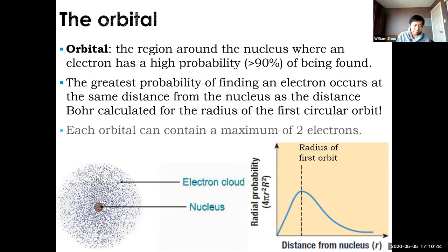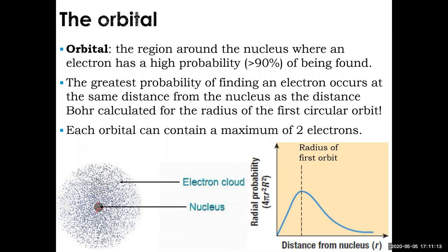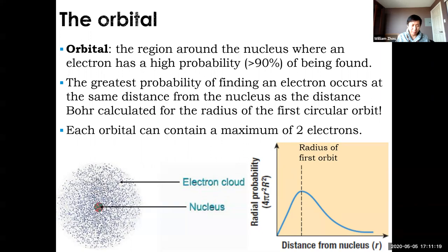An orbital can contain a maximum of two electrons — no more than that. Once you know there are two electrons in there, there won't be a third. If you have more than two electrons, you're going to need more orbitals. There is more than one orbital in an atom, and we'll learn about the different types of orbitals very shortly.